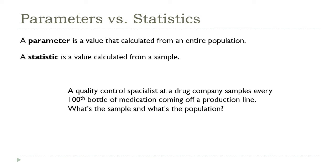Going back to our first sampling example: the proportion or percentage of products that are defective out of the bottles taken from the line would be a statistic, whereas the proportion that are defective in the entire batch — which was our population — would be a parameter. Looking ahead, what we'd like to be able to do is claim that the statistic value is a good representation of the parameter value. In other words, the sample and its properties are representative of the entire population and its properties.